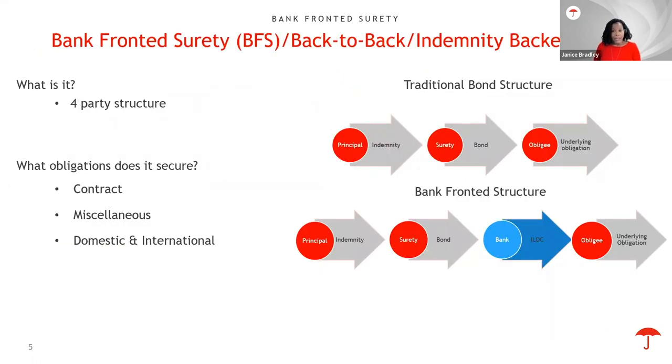What is a bank-fronted surety bond or what is sometimes referred to as a back-to-back or an indemnity-backed letter of credit? It's a surety structure that includes an additional party, that party being a bank. Essentially, both structures are the same. Let's start with the traditional surety structure. From the illustration, you have the principal, the entity that is required to obtain the bond to ensure the faithful performance, the surety, the entity that provides the financial guarantee, effectively standing in the place of the principal, and the obligee, the entity that requires the bond from the principal. Effectively, a bank-fronted surety bond is like a traditional bond, except for the addition of a bank.